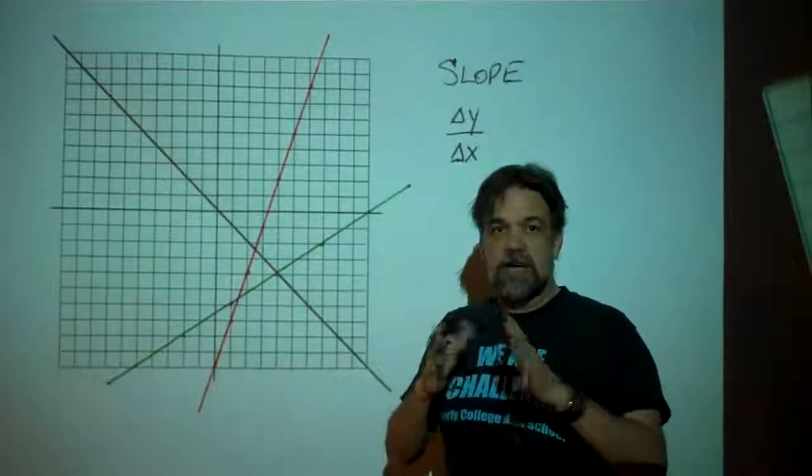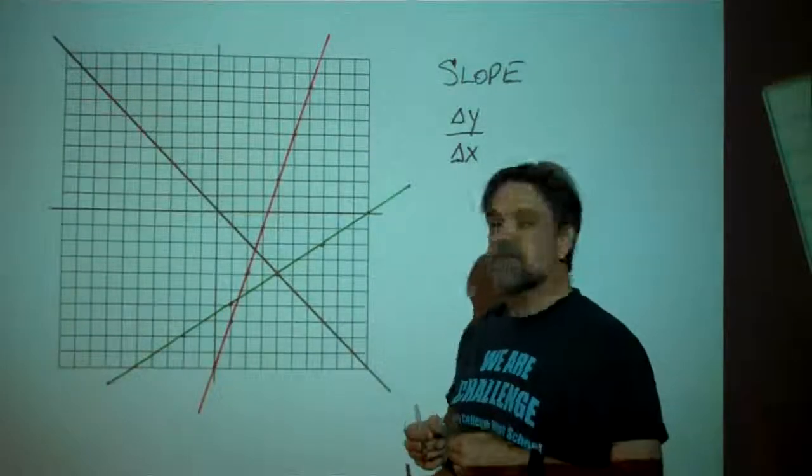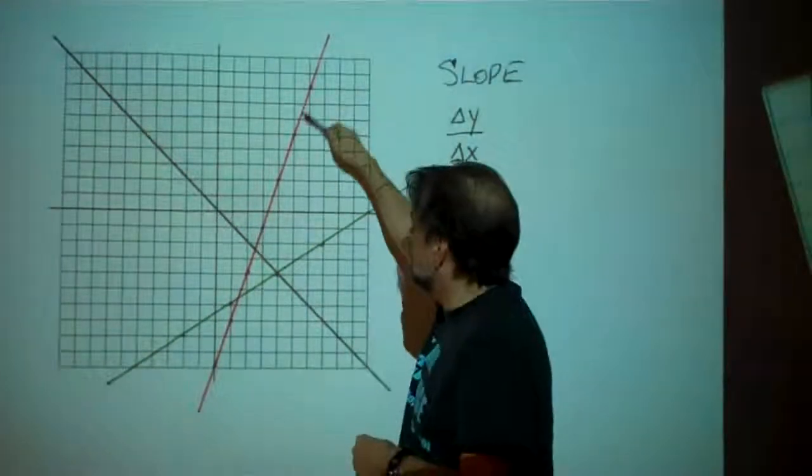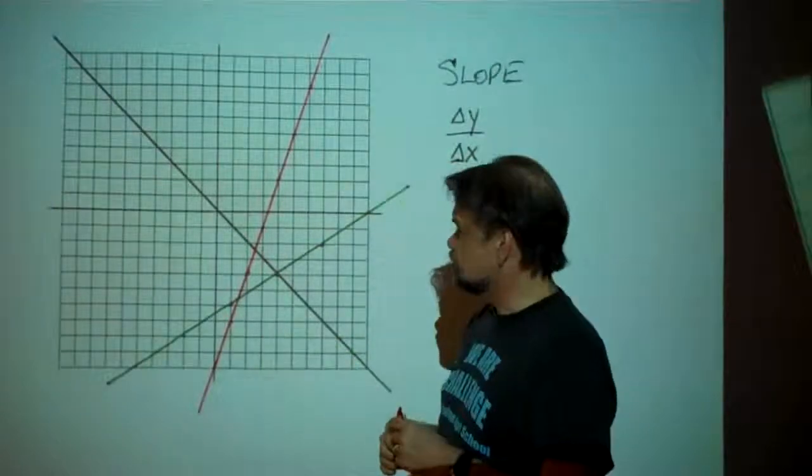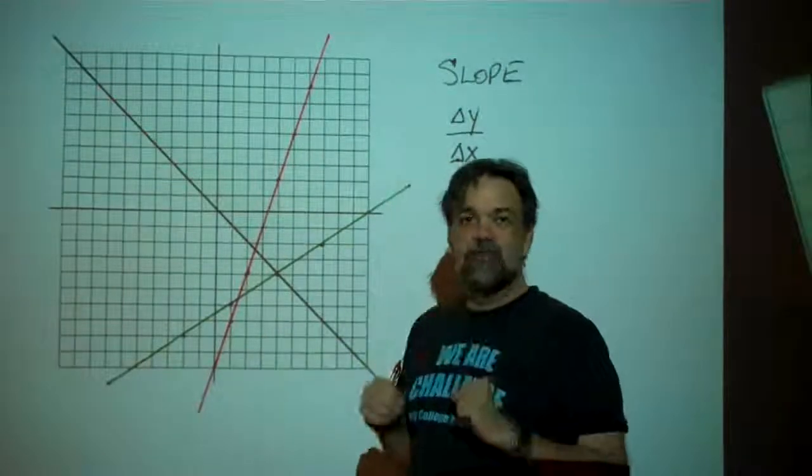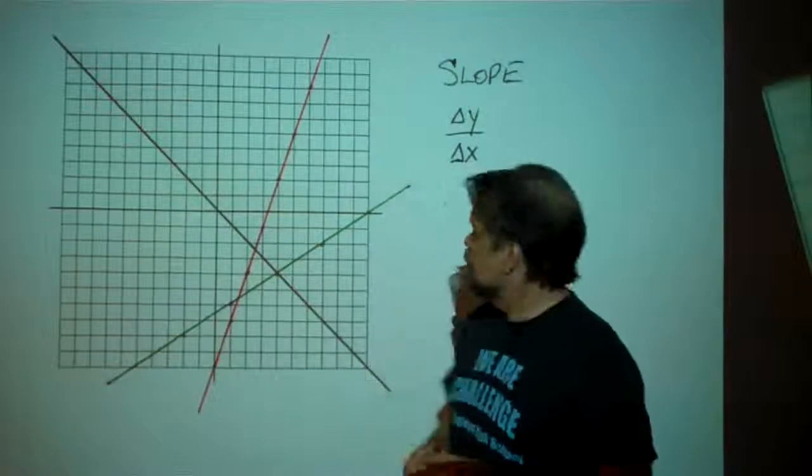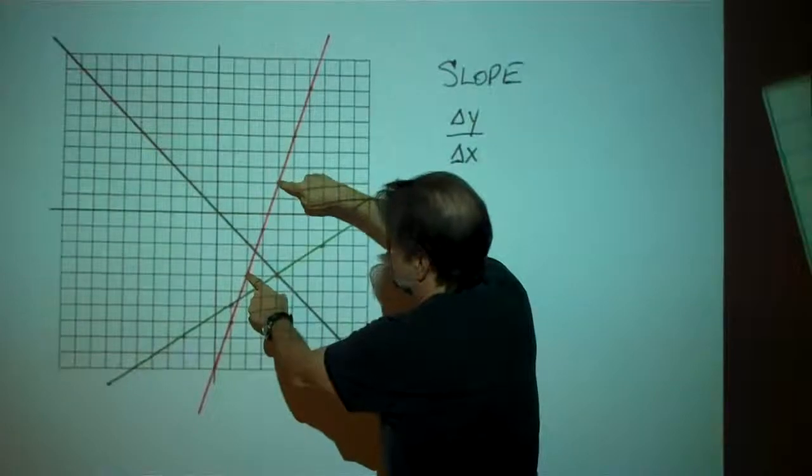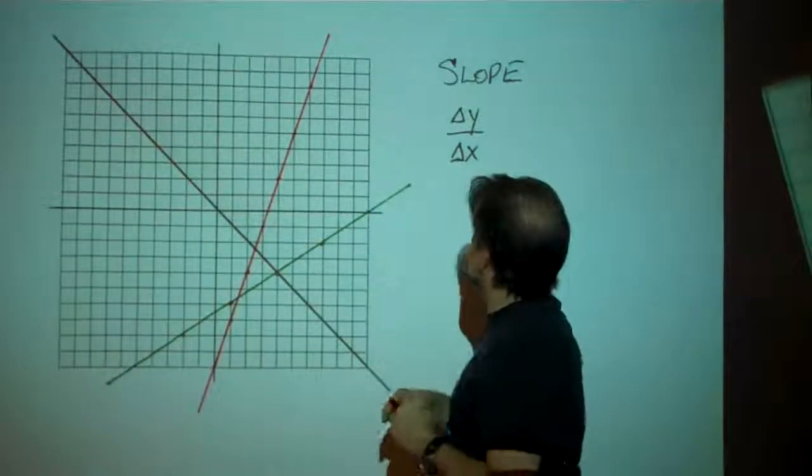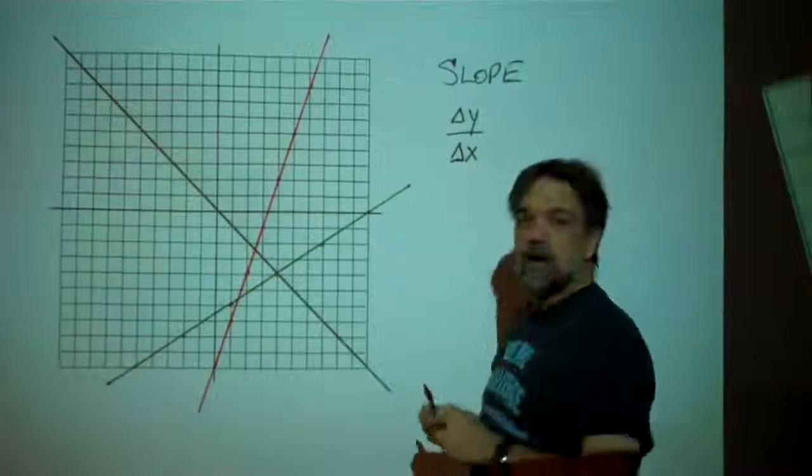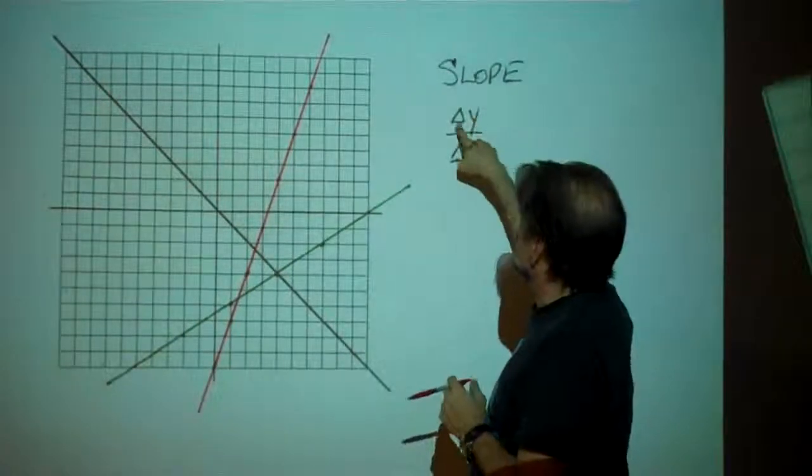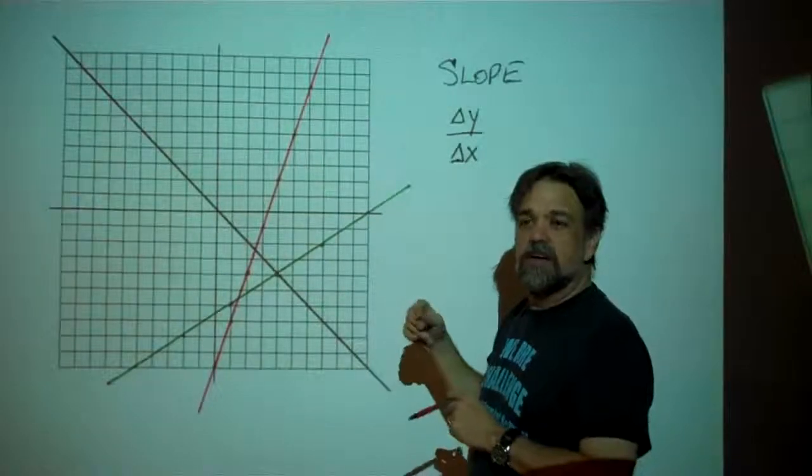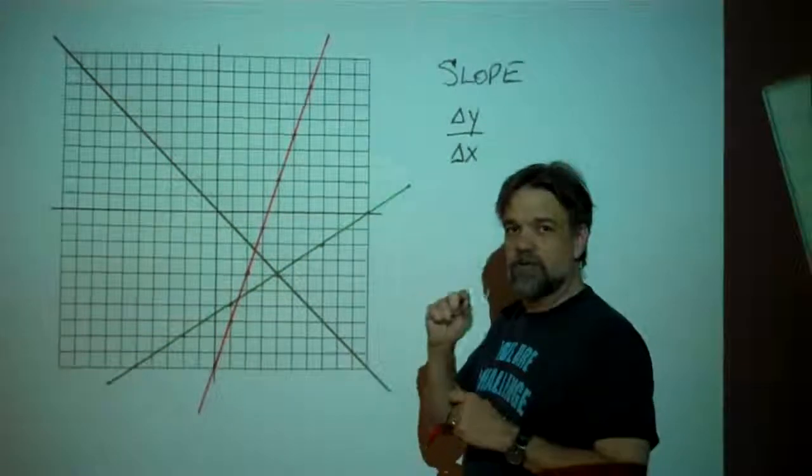Now, how do you measure the slope? Actually, it turns out to be quite easy. Let's start by measuring the slope of this line here. Well, what you do is you find any two points on the line. For example, let's go from this point to this point. And what I want to see is, I want to measure, this little triangle here is a delta. And it's a Greek letter, and delta is the Greek D, and it stands for the difference.